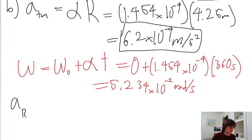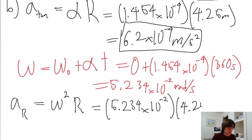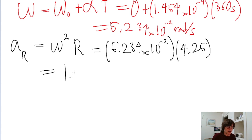Now let's put this into our formula for the linear acceleration radial component, which is the square of the instantaneous angular velocity multiplied by the radius of the ship. So we square 5.234 × 10⁻², and multiply by 4.25. If we put this into a calculator, we find 1.2 × 10⁻² meters per second squared.